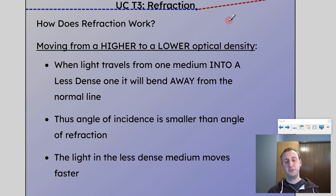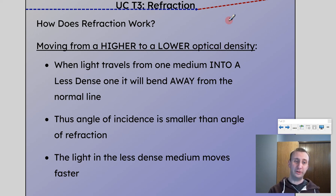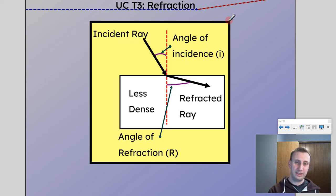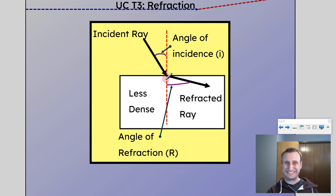So what about the other way? What if I'm moving from higher to lower optical density? In this case, when light travels from one medium into a less dense one, it will bend away from the normal line — the opposite occurs. Thus, the angle of incidence is smaller than the angle of refraction. The light in the less dense medium moves faster. Going to a diagram, here I have my incident ray hitting a less dense material, and because it's going faster, it now curves more away from the normal — it refracts like this.